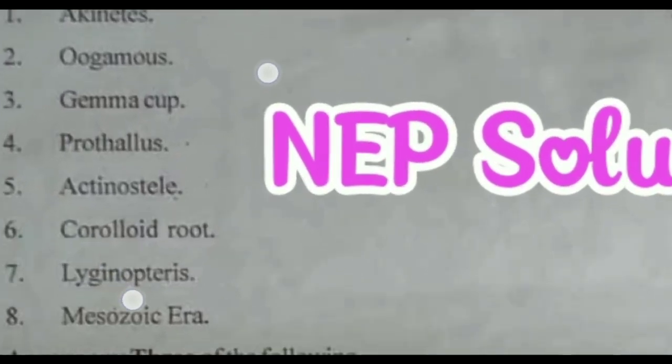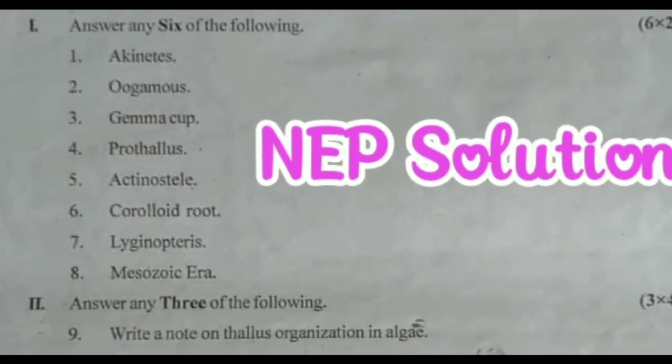First question, you have to define the following: First question is Akinetes, second one Oogamous, third one Gemma cup, fourth one Prothallus.